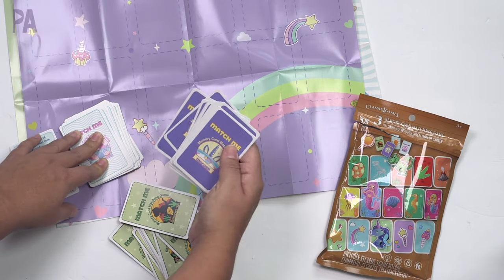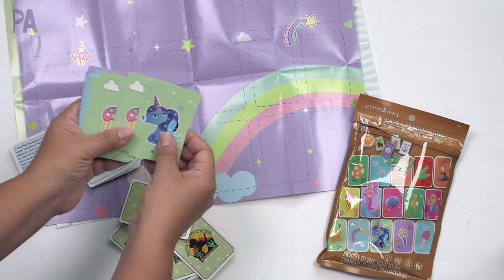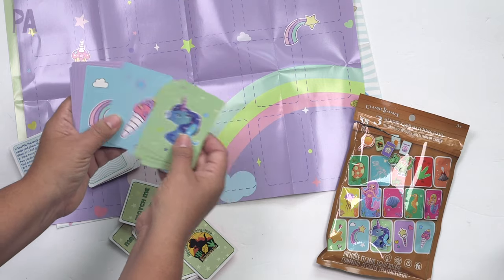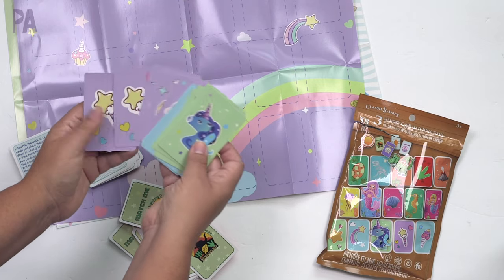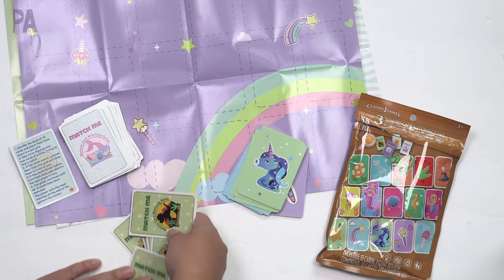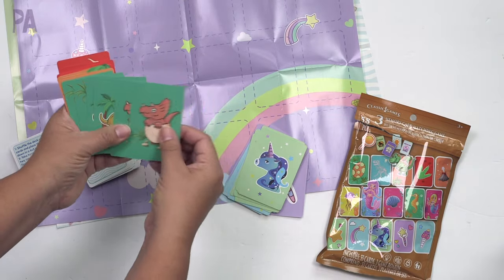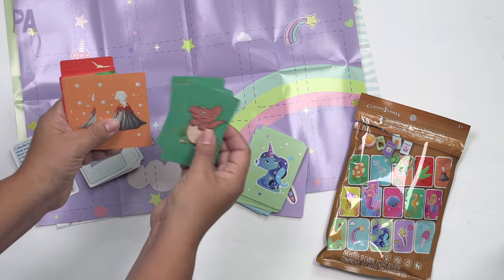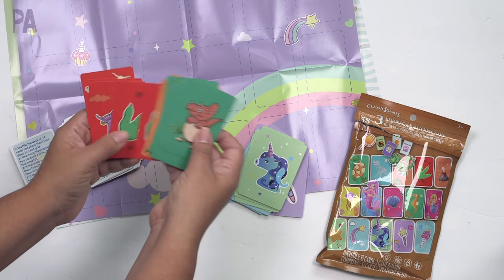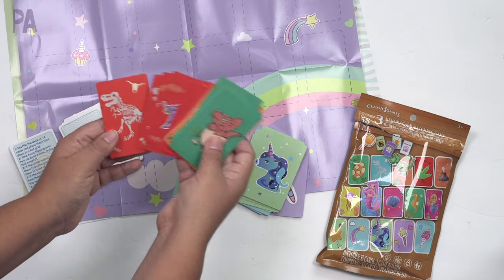Then this one is our unicorn set. So unicorn, cupcakes, stars, ice cream cones, rainbows, and donuts. That's so cute. And then this one, our dinosaur theme. So we have different dinosaurs, eggs, volcano, palm trees, feet, and even skeletons. That's pretty cute.